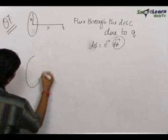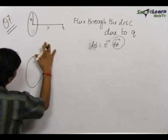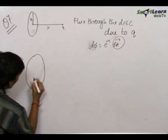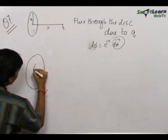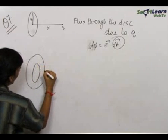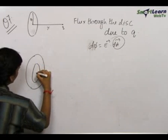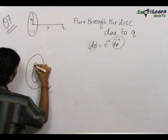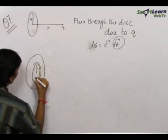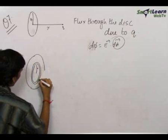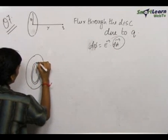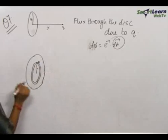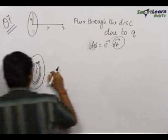The intuitive small element in the case of a disk is a ring. Let us take a ring of radius small r and having a thickness of dr. This dr is actually very small but I have drawn it big so that you can see.